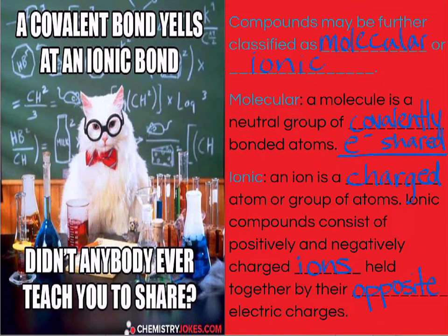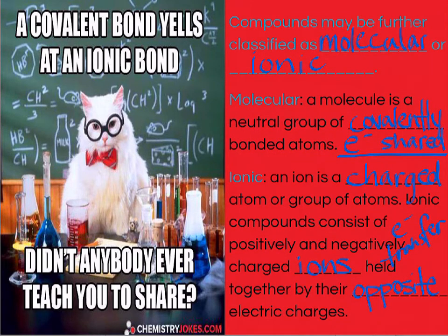So ionic compounds have positively and negatively charged ions that are held together by their opposite electric charges. The way these bonds form is by having electrons transferred rather than shared — not sharing electrons, but transferring them. That creates an electric charge when electrons move around, and if you have opposite charges they're going to stick together. If you have the same charge, like a negative and a negative, they don't stick together very well.